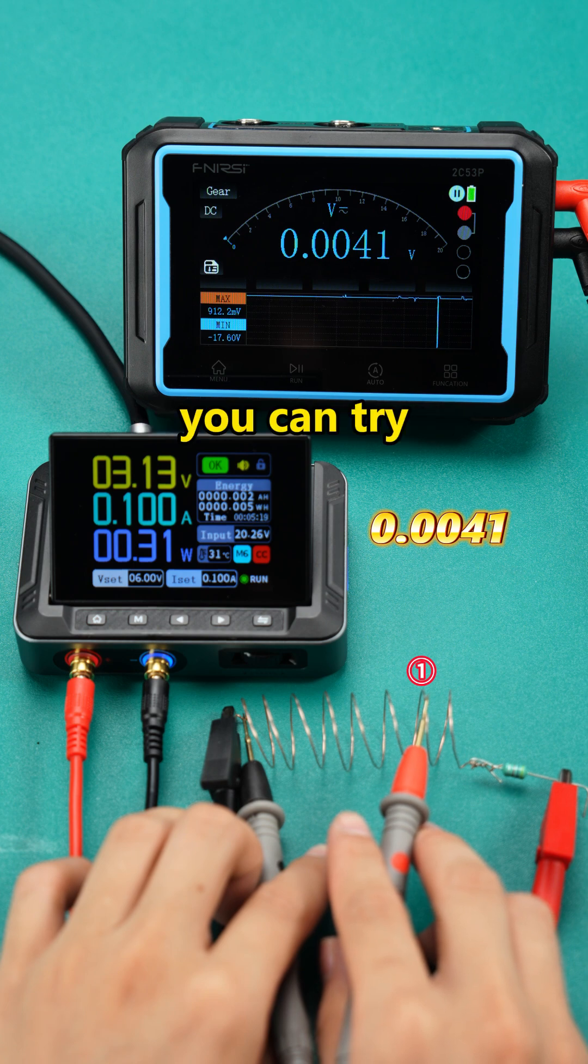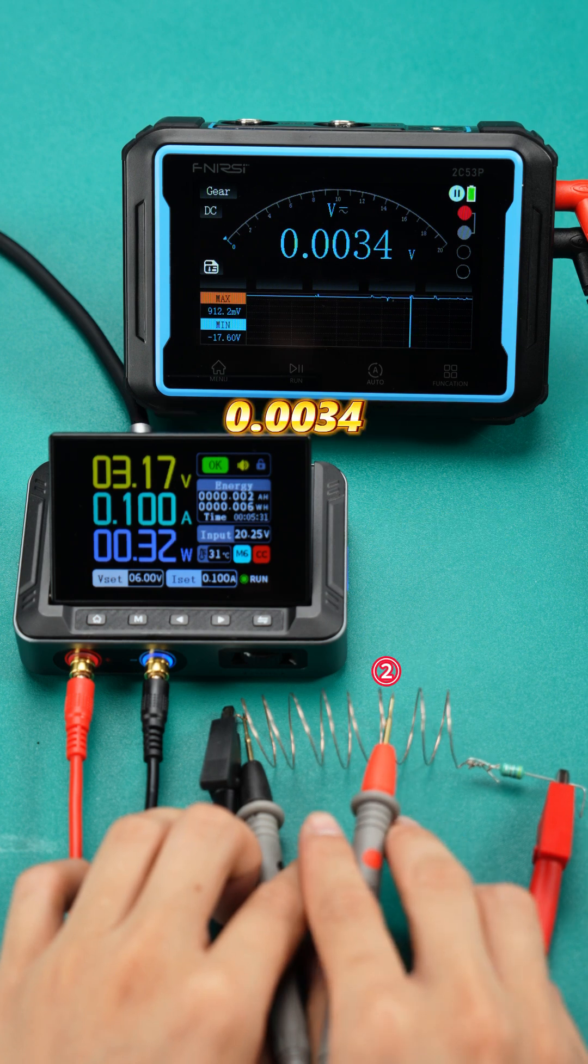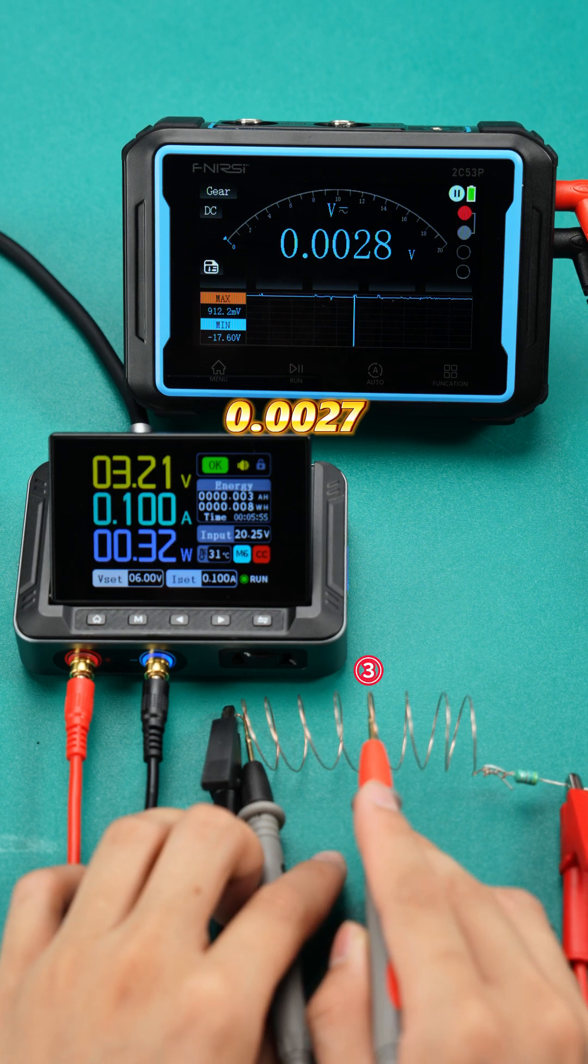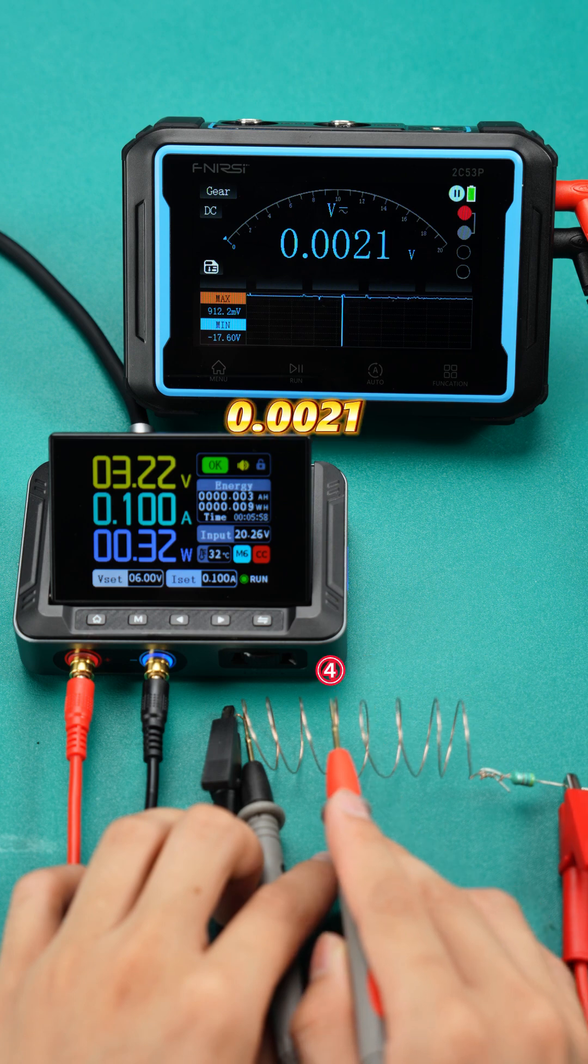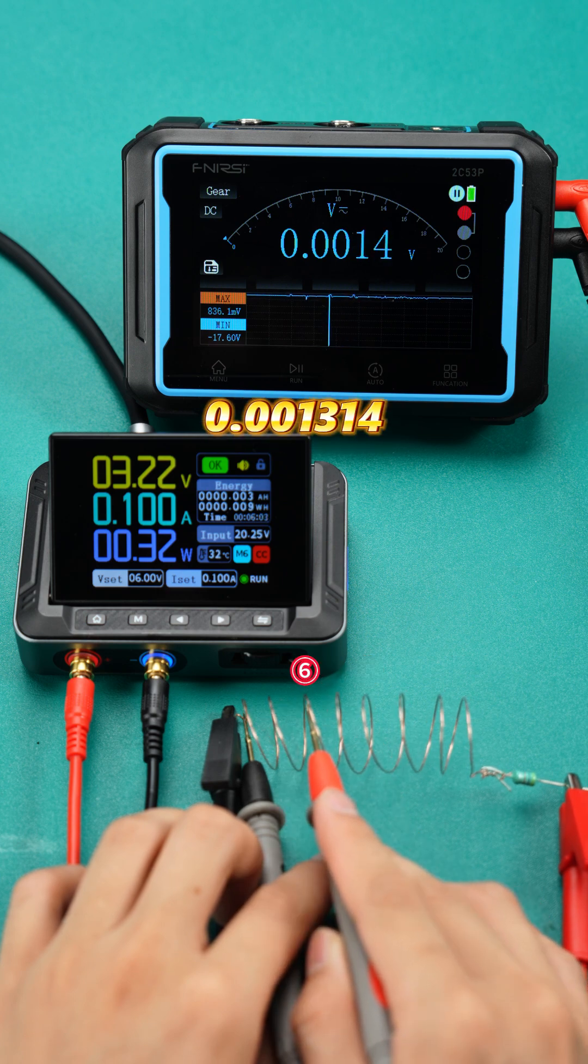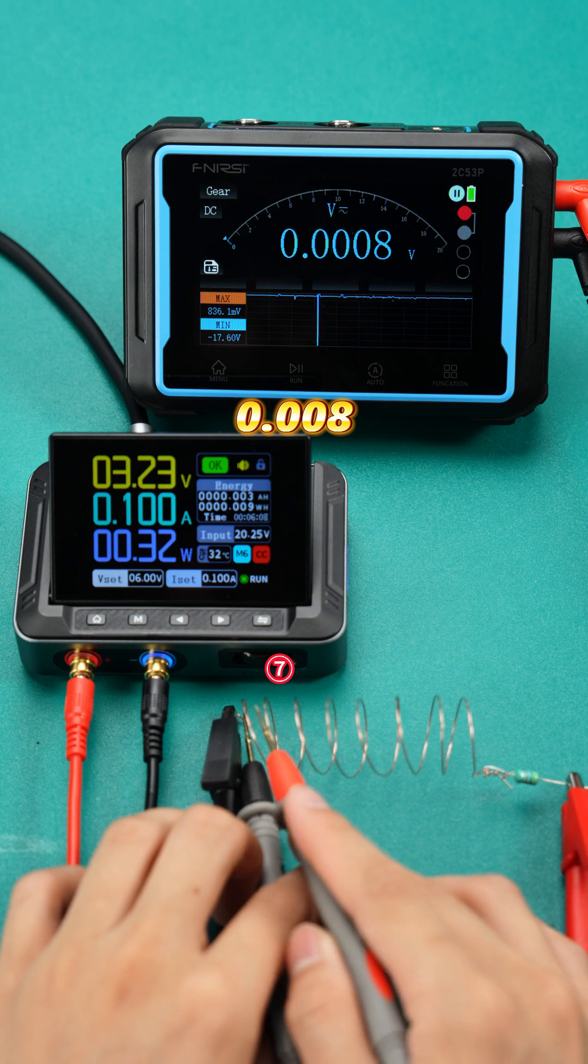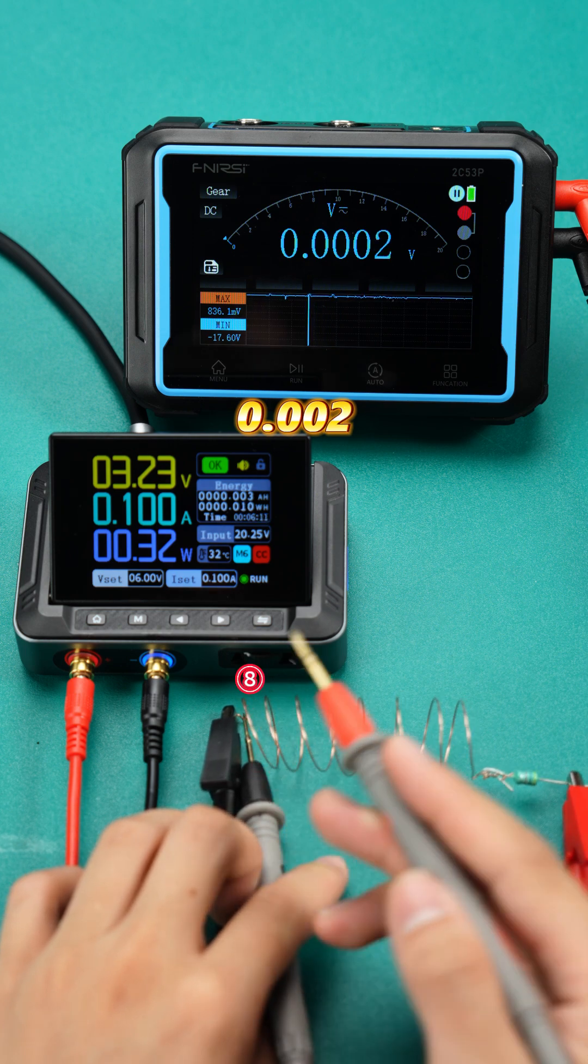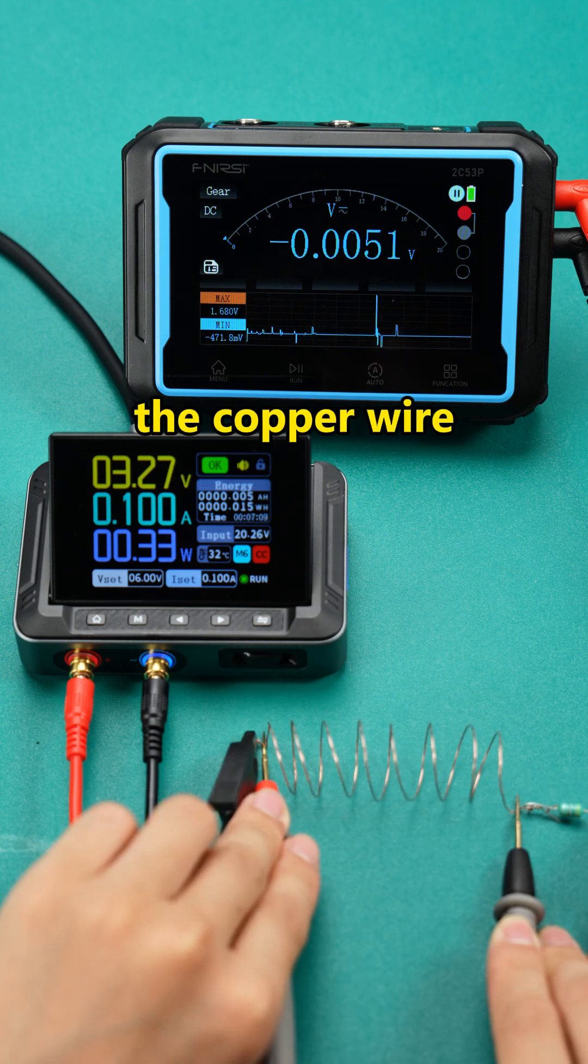Now you understand, you can try to tell me. This is the exact resistance value of the copper wire.